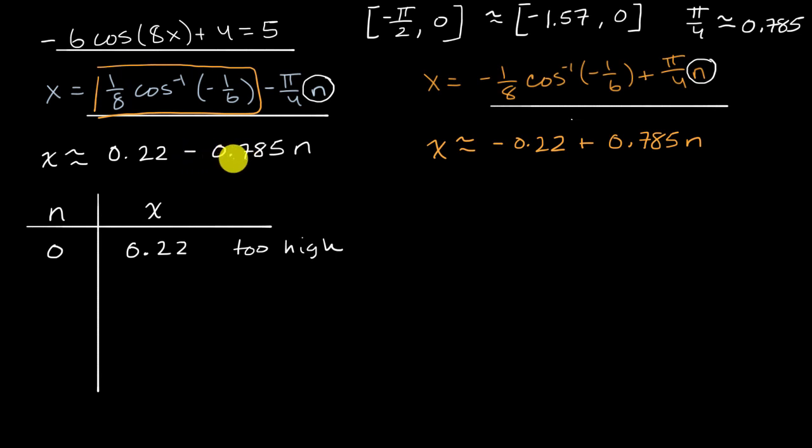So it's good that here we are subtracting 0.785. So I would use positive integer values of n to decrease this 0.22 here. So when n equals one, we would subtract 0.785 from that. And I'll round all of these to the hundredths place. And that would get us to negative 0.57. And that does sit in the interval. So this looks good. So this would be a solution in that interval right over here. And let's try n equals two. So we would subtract 0.785 again. And that would get us to negative 1.35. And that also sits in the interval. It's larger than negative 1.57. So that looks good.